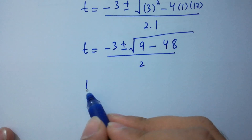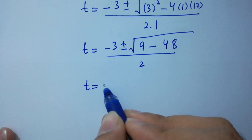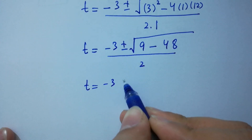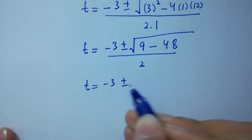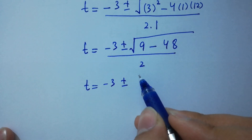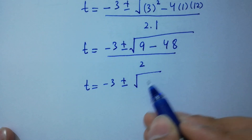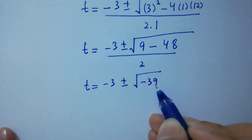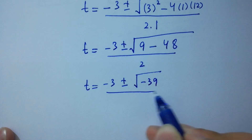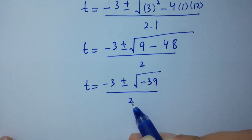t equals minus 3 plus or minus square root of 3 squared, which is 9, minus 12 times 4, which is 48, over 2. t equals minus 3 plus or minus square root of 9 minus 48, giving us minus 39, over 2.